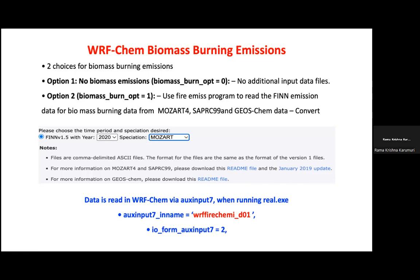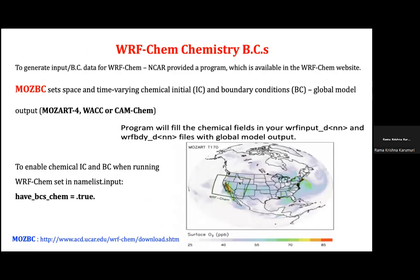For biomass burning, two options exist: zero (no additional inputs — biomass burning not considered) or one (emissions provided). Fire emission data comes from the FINNv1 emission inventory provided by NCAR, which combined MOZART-4, SPARC 1999, and GEOS-Chem data. These fire emissions are provided to the model as wrffirechemi and wrfire_emis files via auxiliary input 7.